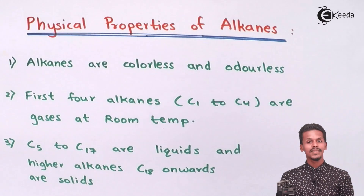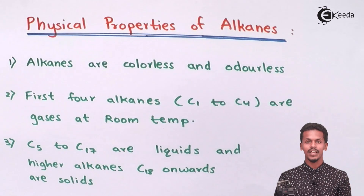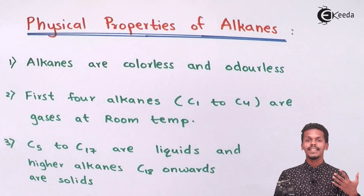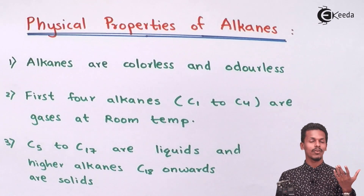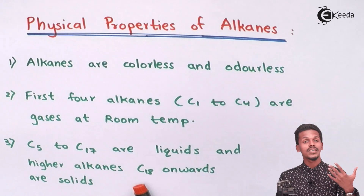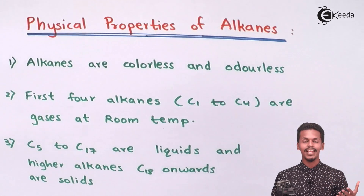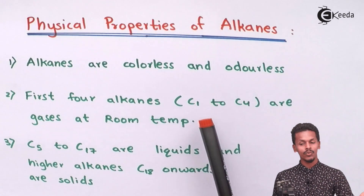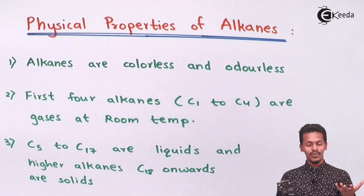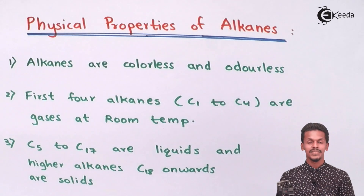From carbon number five to carbon number 17, alkanes are basically liquids. That is also the reason alkanes are known as paraffins. The higher alkanes — those containing more than 18 carbon atoms — are always solid. So alkanes are categorized into: gases (C1–C4), liquids (C5–C17), and solids (C18 onwards).